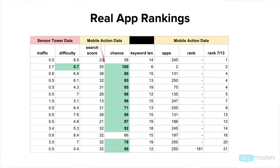So when I said Mobile Action has really accurate data — it's true. The difficulty scores are really accurate. But I think what's happening is the search scores are not as accurate. Sensor Tower is saying these are really low traffic keywords: 0.5, 0.6, 0.5, 0.5. They can't go any lower than this — I haven't seen anything lower than 0.5. And unfortunately these scores on Mobile Action are pretty high.